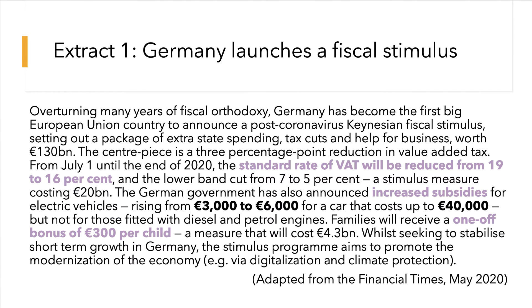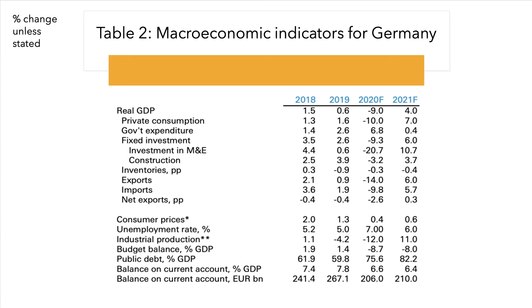The German government has decided to kickstart their economy using a Keynesian fiscal stimulus. The centerpiece is a three percentage point cut in VAT for six months, from 19 to 16%. They've also announced an increased subsidy to consumers who are thinking of buying electric vehicles, adding €3,000 to the subsidy. Families will also receive a one-off bonus of €300 per child. Europe's biggest economy has basically brought in a fiscal stimulus.